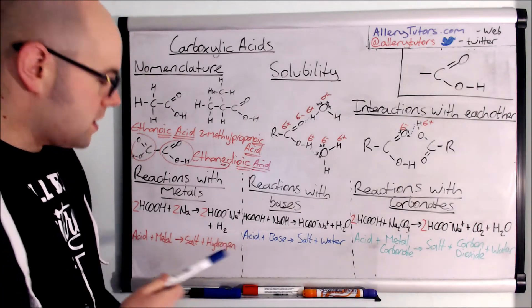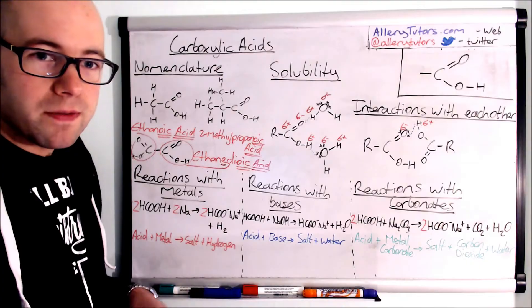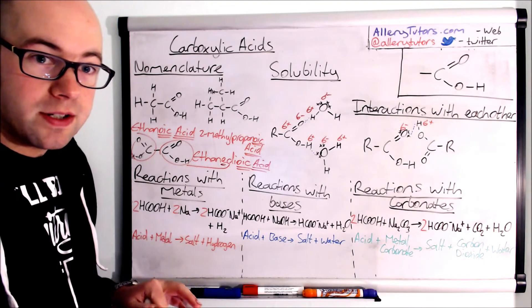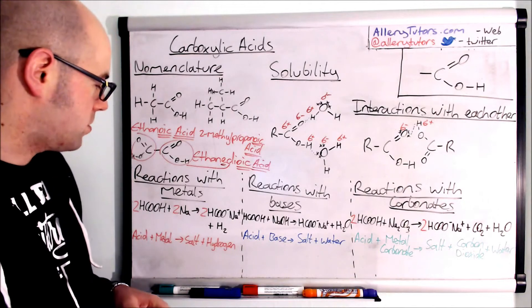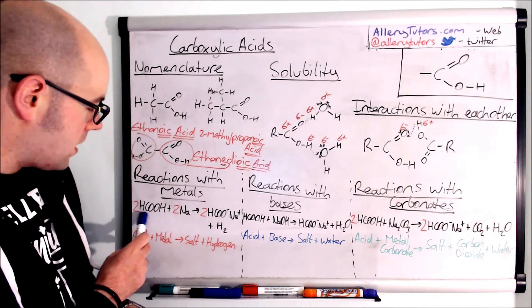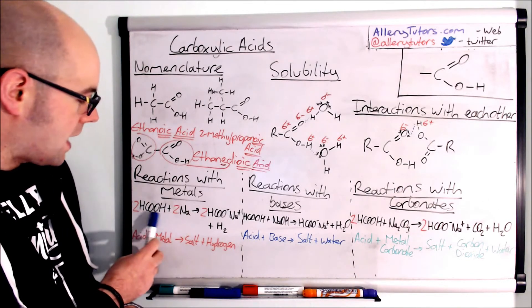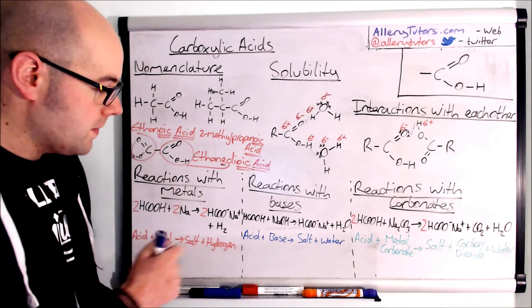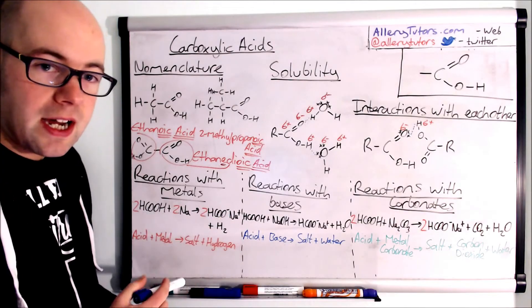Okay and the reactions with them are pretty straightforward actually. You do need to know them. But they are standard equations. You just need to be able to name the compounds I suppose. So here's one here. This is methanoic acid we're going to use. And we're going to react it with sodium. This is a reaction with acid and a metal. And this will produce a salt and hydrogen.